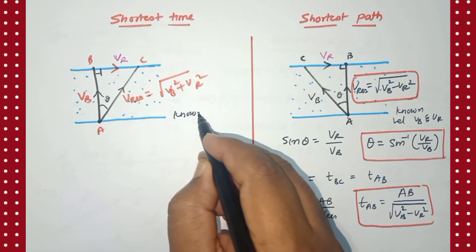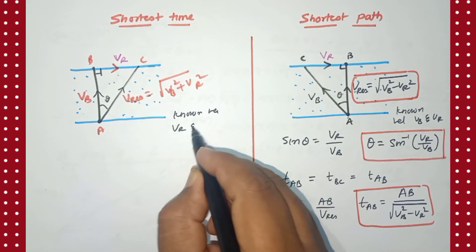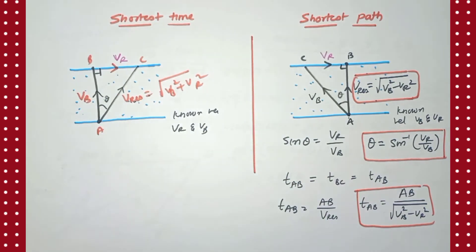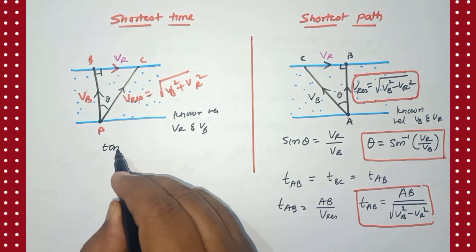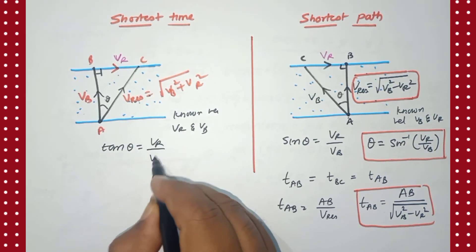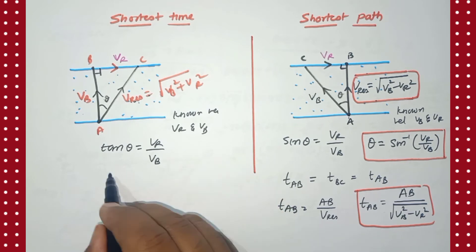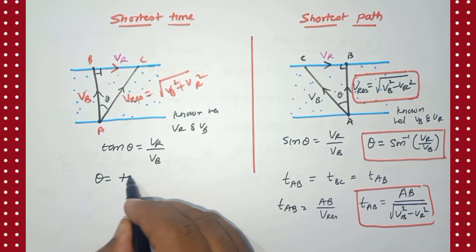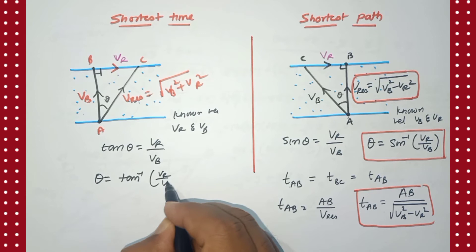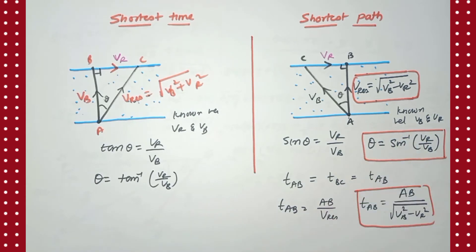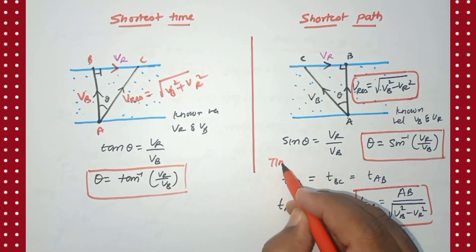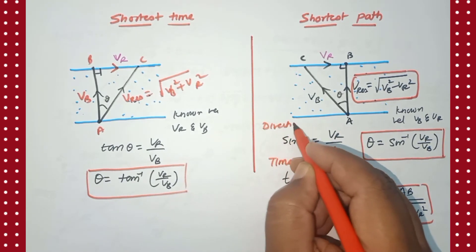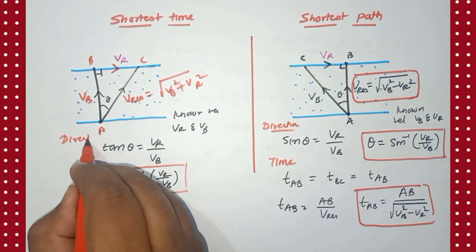We need to find the direction — the angle of the hypotenuse. The known velocities are vr and vb; we know both the opposite and adjacent sides, so we apply tan theta. Tan θ = opposite / adjacent = vr / vb, therefore θ = tan⁻¹(vr / vb). So we have both the direction and the resultant velocity for the shortest time case.